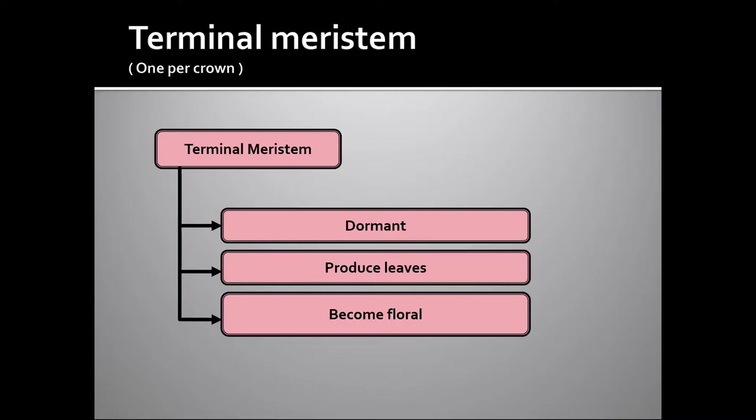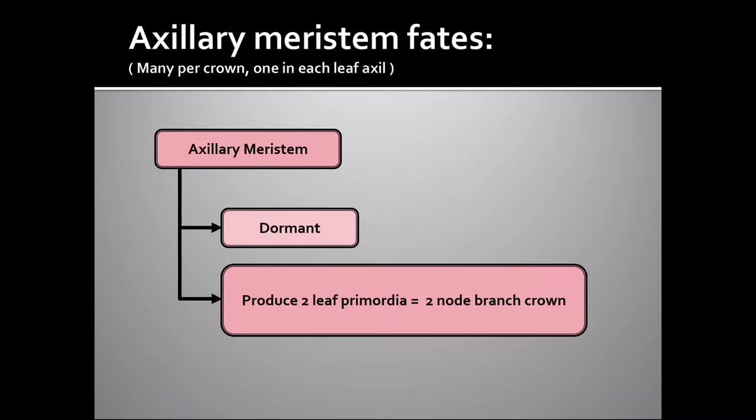The terminal meristem can remain dormant, it can produce leaves, or it can become floral. The axillary meristem can remain dormant or produce two leaf primordia, which in essence is a two-node branch crown. There are two nodes, two internodes, and two leaf primordia.